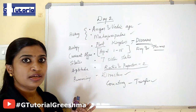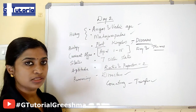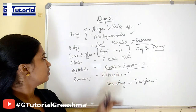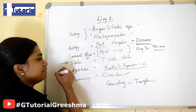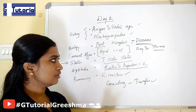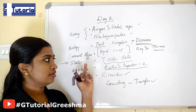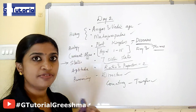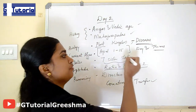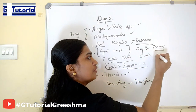Then study important schemes launched by different state governments and national schemes. Then study the 7 sister states of the North East. Study about that today. Yesterday I think you studied CMs and governors of 5 different states. So here, if you are studying the 7 sister states, also study the CMs and governors of those states.